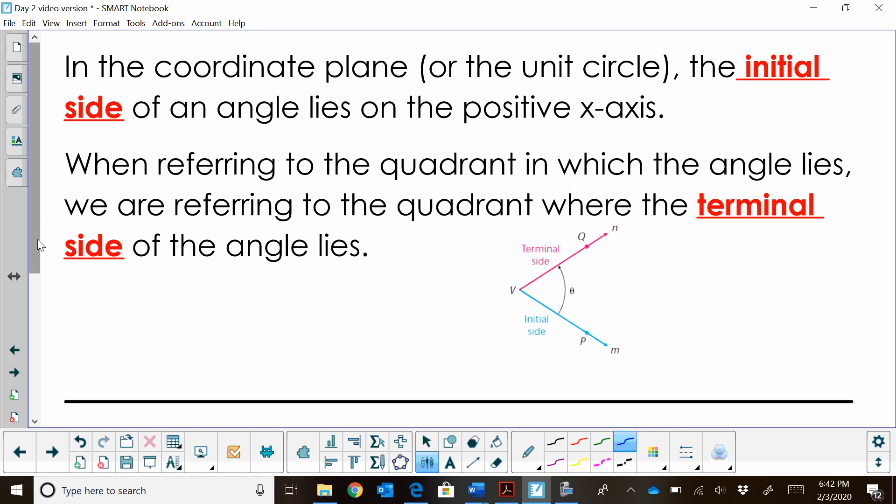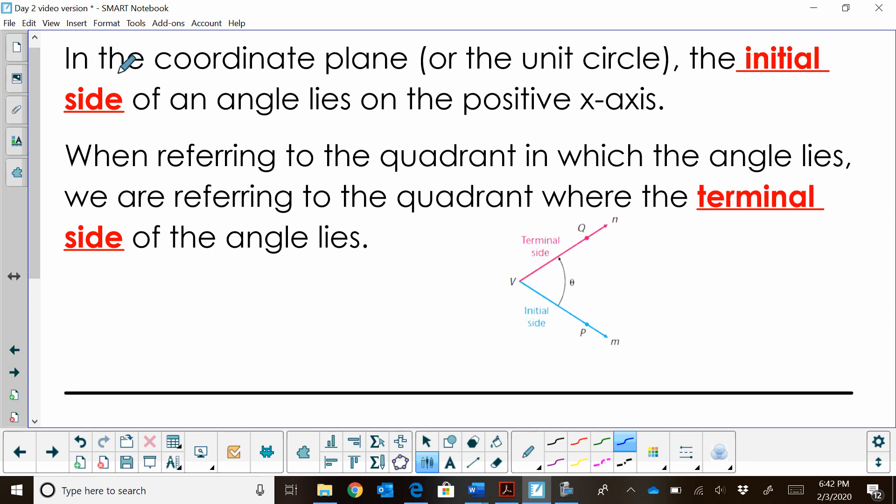So let's talk about the angle itself first. In the coordinate plane, meaning our x and y axis, we're going to create a unit circle, but in that unit circle we have to have some initial side of an angle and a terminal side.